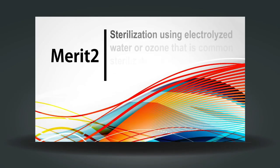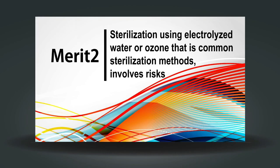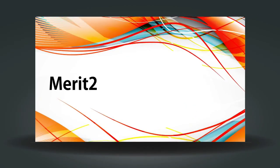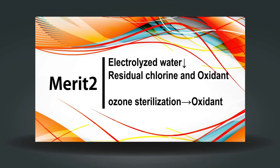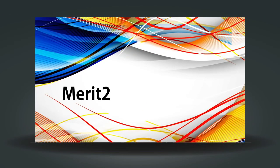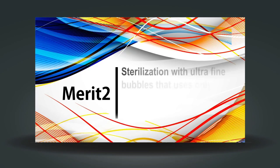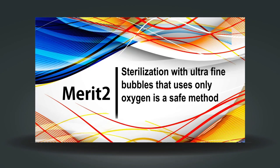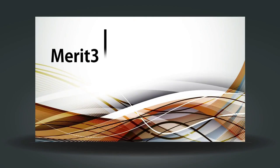Sterilization using electrolyzed water or ozone, which are common sterilization methods, involves risks. After sterilization using electrolyzed water, residual chlorine and oxidants that are toxic to fish remain in the water. Ozone sterilization also involves a risk of residual oxidant. Sterilization with ultrafine bubbles, which uses only oxygen, is a safe method and is free from these risks.